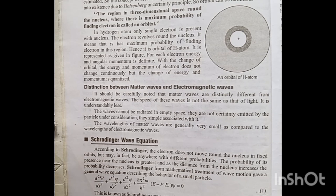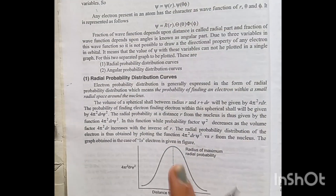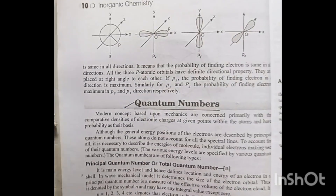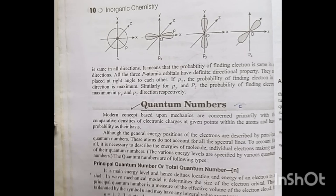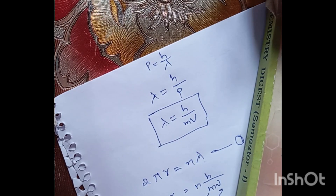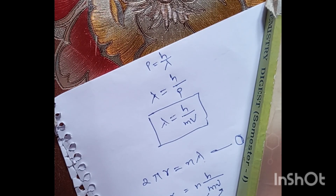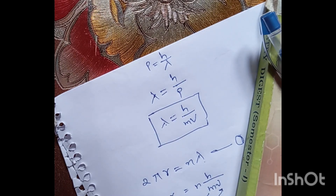Today's video is complete. In the next video, we will study the Schrödinger wave equation, significance of ψ and ψ², radial and angular wave functions, probability distribution curves, and quantum numbers. Subscribe for the next video. You will find all of this in BSc Inorganic Chemistry. Thank you for watching.